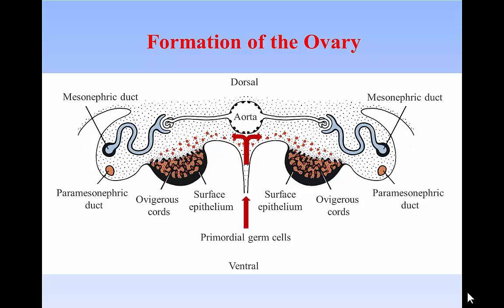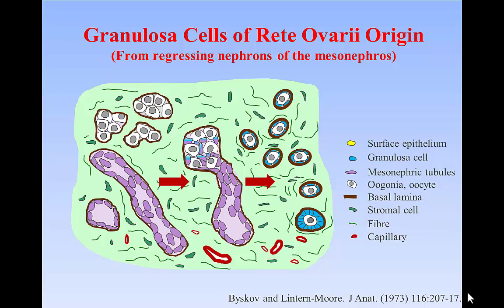But the origin of the granulosa cells is less clear. Initially, it was considered that granulosa cells were derived from the rete ovarii, which are derived from the epithelial cells of the nephrons in the mesonephros.